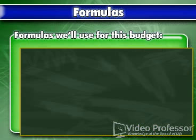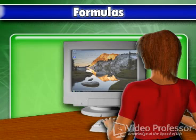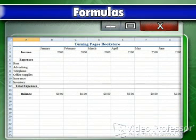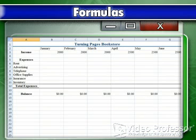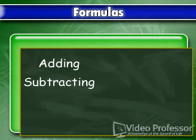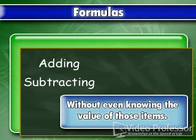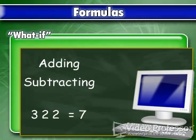The formulas we'll use for this budget are very simple. Balance means income minus total expenses. Total expenses is the sum of all the expenses listed here. Although we don't have any numbers in the spreadsheet, we can still set up the correct formulas to calculate our raw data. We've just touched on the real power of spreadsheet programs: we can write formulas to define the relationship between items, such as adding or subtracting, without even knowing the value of those items. We can then enter different numbers to test various models for their answers. This is called a what-if scenario.